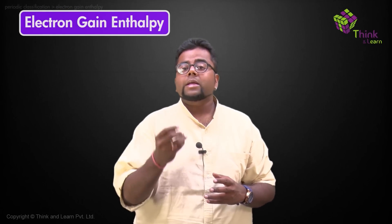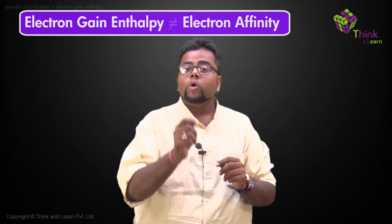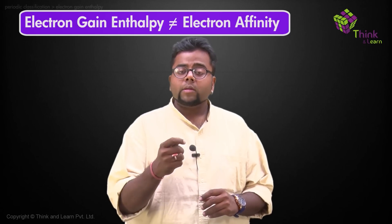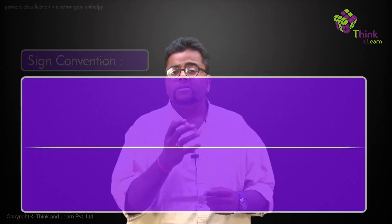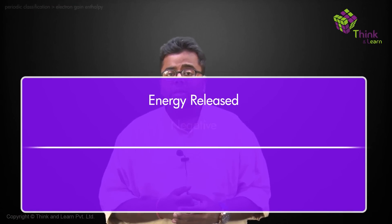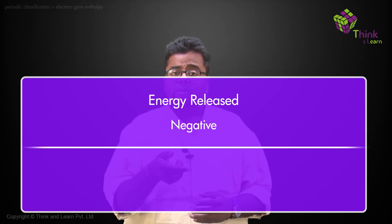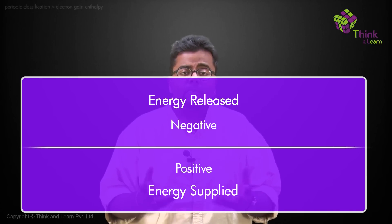The next property we're going to discuss is the electron gain enthalpy, or as some books call it, the electron affinity. They are closely related but not exactly the same. During the addition of an electron, there could be two possibilities: either energy is given out or energy is absorbed. The sign convention is: if energy is released by the atom while accepting an electron, that is termed negative; if we have to supply energy to make the electron go inside the atom, it is positive.